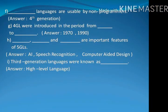F: Fourth generation languages are usable by non-programmers. G: 4GLs were introduced in the period from 1970 to 1990. H: AI, speech recognition and computer-aided design are important features of 5GLs. I: Third generation languages were known as high level language, in short HLL.